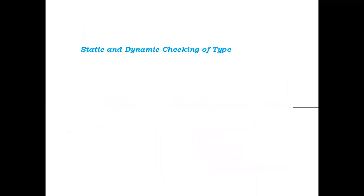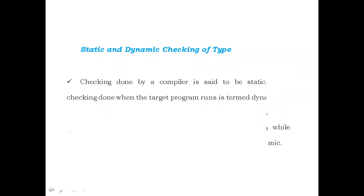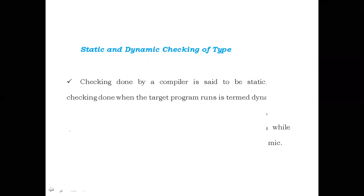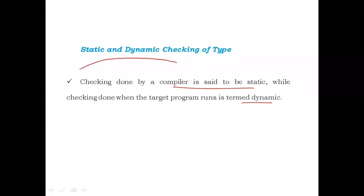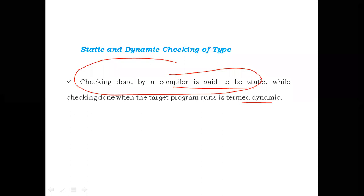Type checking is generally of two types: static type checking and dynamic type checking. If the data type checking is done by the compiler at compile time, it is called static type checking. If the same type checking is done at runtime, it is known as dynamic type checking.